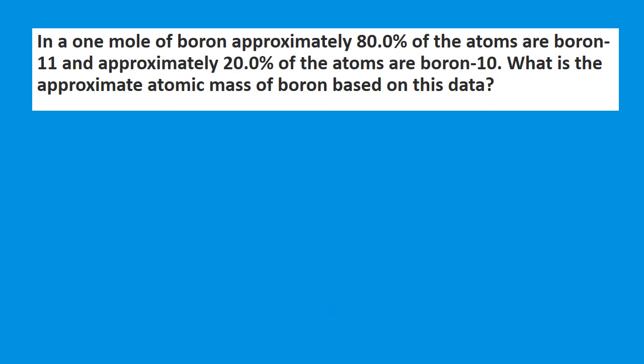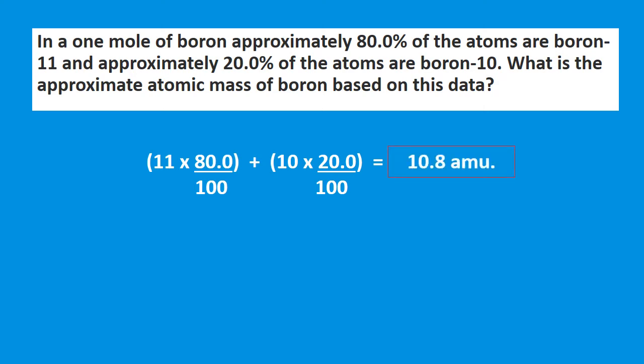In one mole of boron, approximately 80% of atoms are boron-11 and 20% are boron-10. Since boron-11 is in greater abundance, we expect the atomic mass to lie closer to 11 than to 10. We do mass times percentage for boron-11 plus mass times percentage for boron-10, and that gives us 10.8 atomic mass units — which is indeed closer to 11 than to 10.